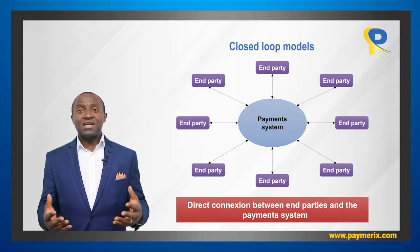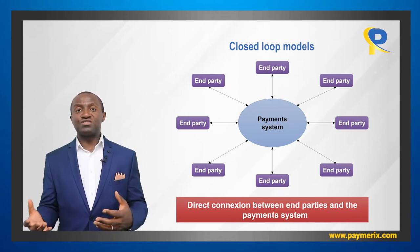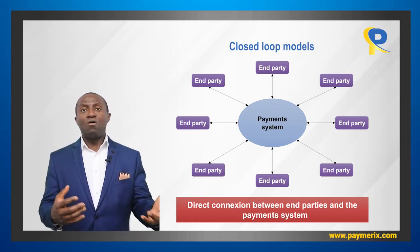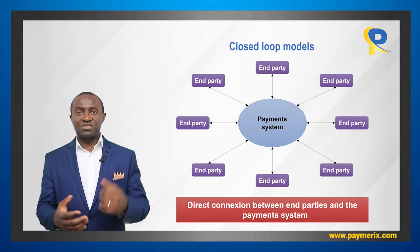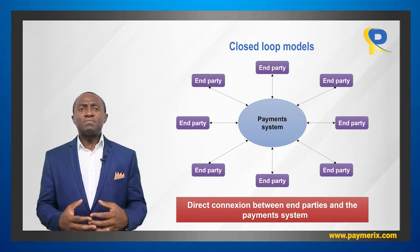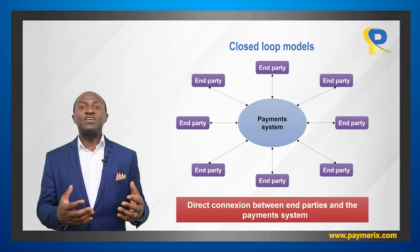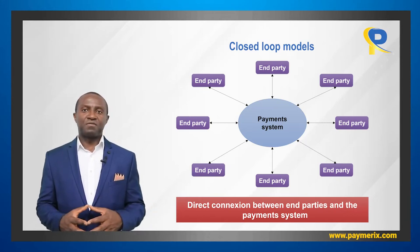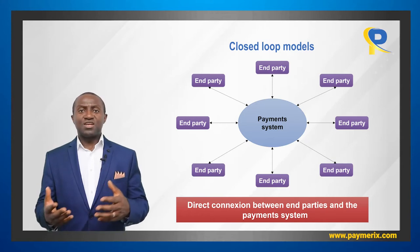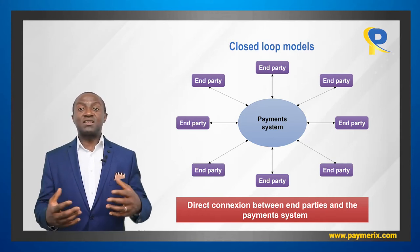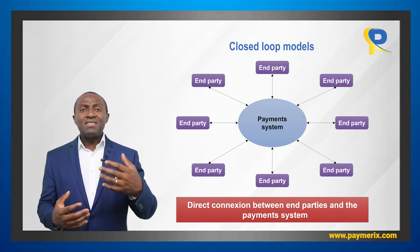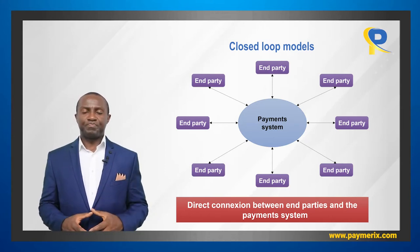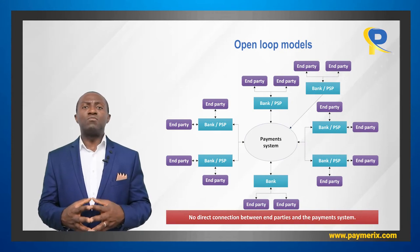In open-loop systems, end parties access the payment system through intermediaries. In closed-loop systems, the end parties have a business relationship and transact directly with the payment system. End parties are companies, merchants, and individuals that join the system either as buyers or sellers of goods and services. Examples of closed-loop networks are the traditional networks of American Express, PayPal, and Bitcoin. Merchants and consumers join these systems directly without going through an intermediary.